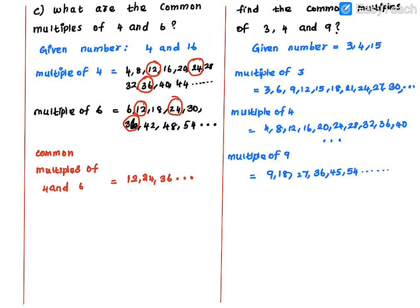Now look at what numbers are common across all three lists. You can add more multiples of 3 — 33, 36, 39, 42, 45, 48, 51 and so on. The common number is 36 — it appears in multiples of 3, 4, and 9. So 36 is a common multiple. You can find at least 2 to 3 common numbers. Further common multiples are 72, 108, and so on. In the next session we will look at exercise problems.